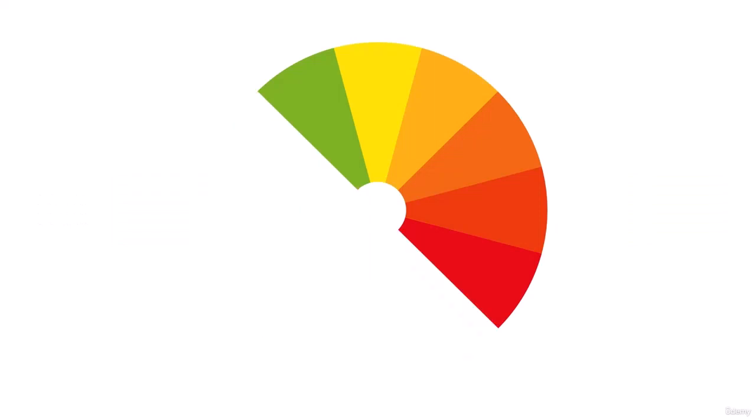On this side of the wheel we have the warmer hues — the warm greens, yellows, oranges, and reds. And on this side we have the cooler hues — cool greens, blues, and purples.